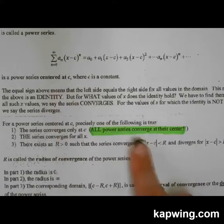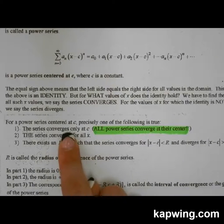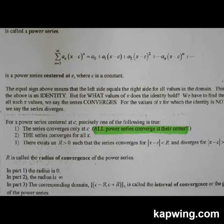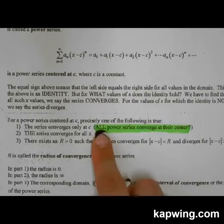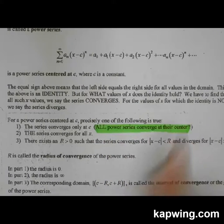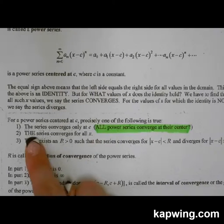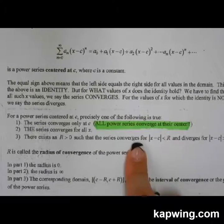We're going to be looking for that center today, and that center is going to help us figure out the interval of convergence. We have three different situations. The first is that the series diverges, and it only converges at one spot — the center. Another situation is when the series converges absolutely, meaning it converges for all x's in the domain. The last situation is that it converges only for a specific interval.